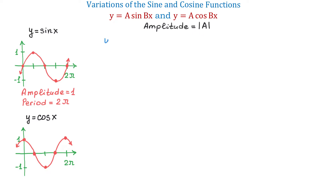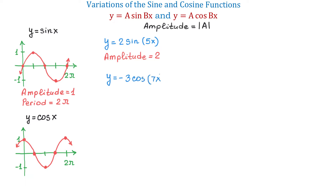For example, in the function y equals 2 sine of 5x, the amplitude is 2. This means that on the graph the highest value of y will be 2 and the minimum value will be negative 2. And in the function y equals negative 3 cosine of 7x, the amplitude is positive 3. So whatever number we have in front of the function, the amplitude is always represented by the positive of that number.